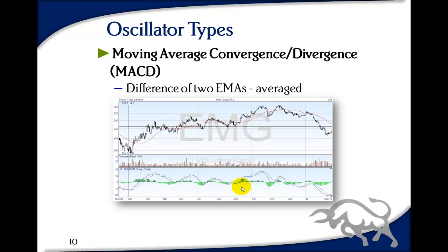We use the MACD in the same way: look for the crossing when it's in an extended position. On this chart we don't have lines to show overextension, but we can see obviously where something is high — in October that's clearly a high — and the signal line crosses; providing the chart looks right, that's a short, and the short would have made money. The small green bars are optional additions that show the difference between the two lines — where the bars are zero that's the actual crossing. As the bars get smaller it shows the lines are approaching each other, giving you an indicator before the actual crossing and preparing you for your trade.